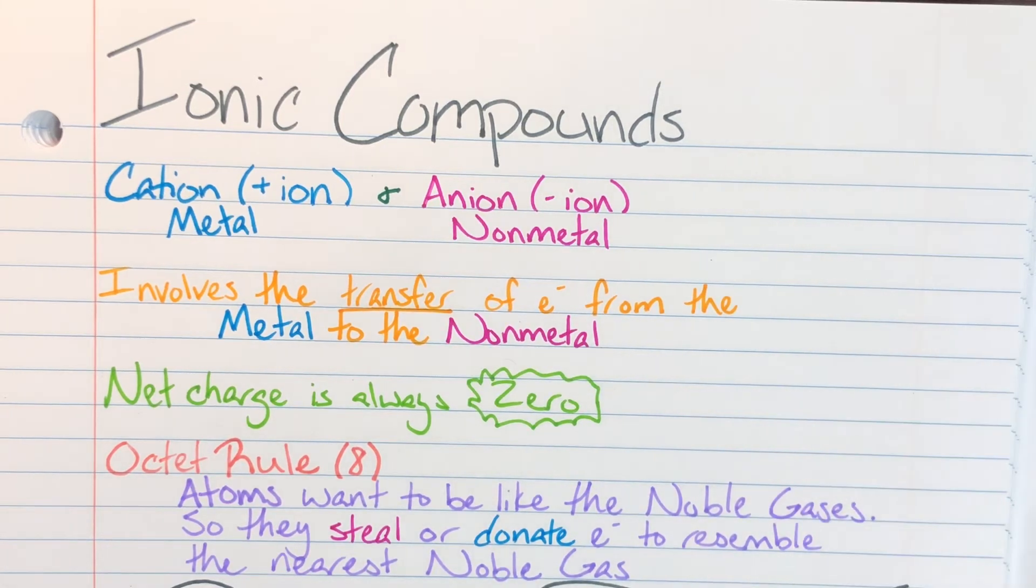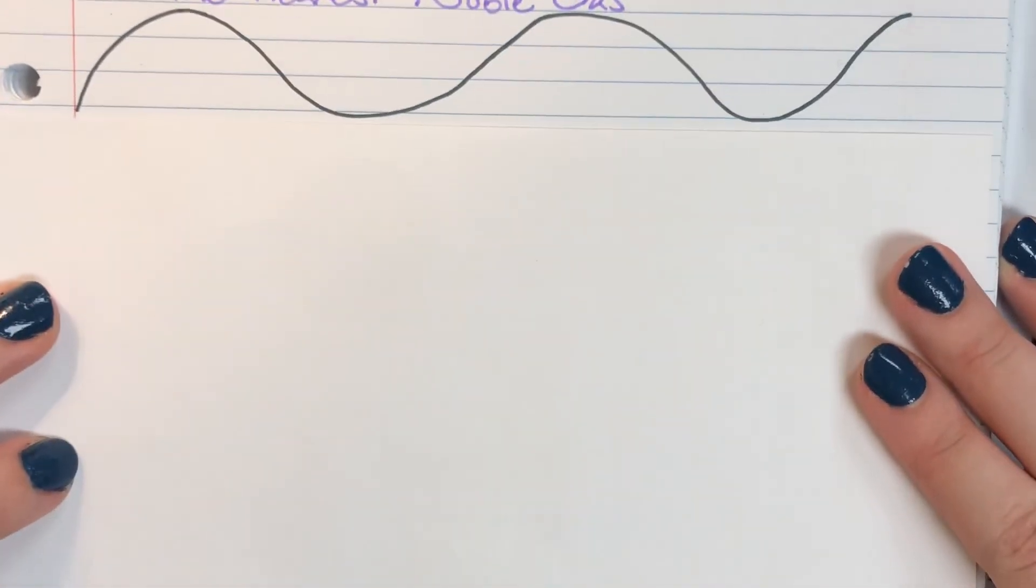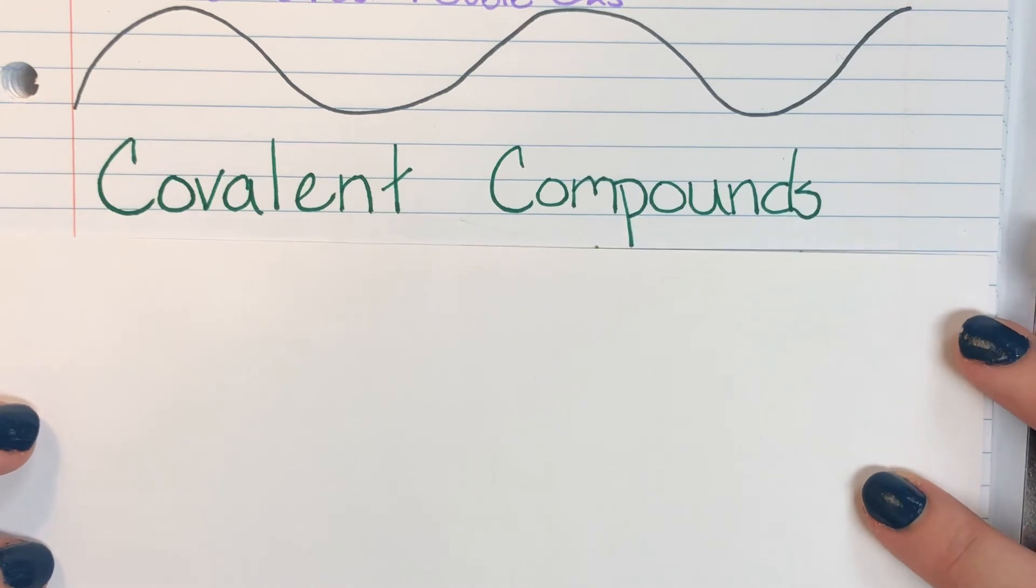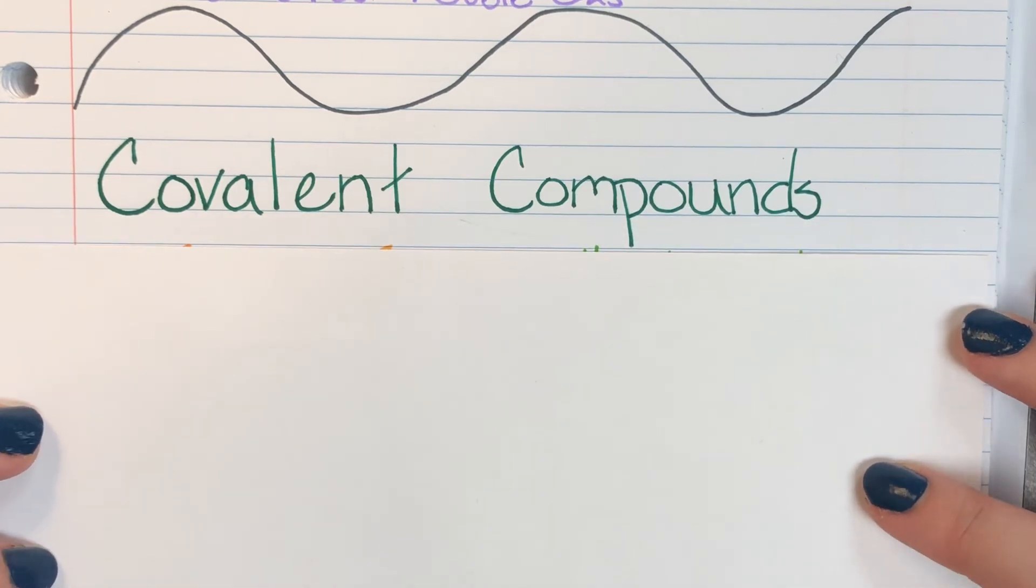So that is everything that makes up an ionic compound with both cations and anions, metals and non-metals. And we are going to go ahead and move into our second type of compound, and that is going to be our covalent compounds.